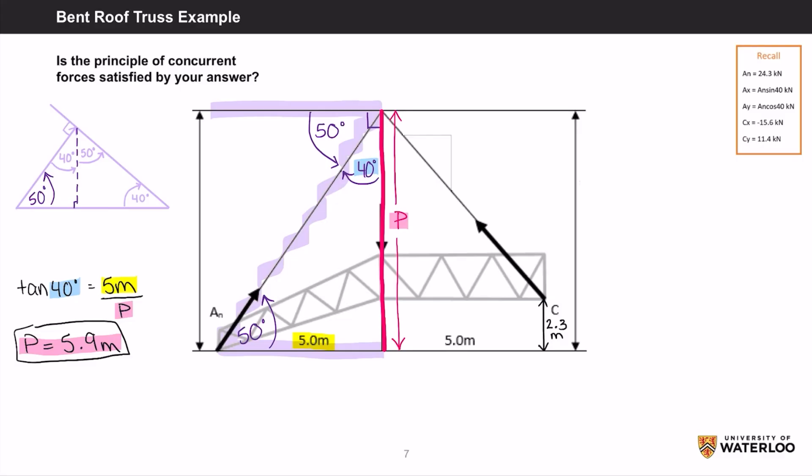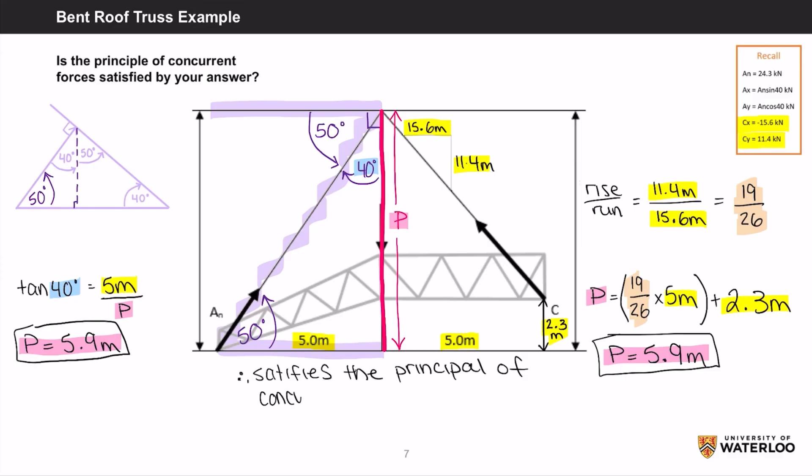To find the height for the right side of the diagram, we can use CX and CY as distances instead of forces as they are also the ratio of force C. Using the ratio of 11.4 over 15.6 or also known as 19 over 26, we can multiply it by the distance to see what the height would be in 5 meters. So P equals 19 over 26 times 5 meters. Don't forget to add 2.3 meters after as the right side of the diagram is slightly higher than the left. You then get P equals 5.9 meters, showing that this system does satisfy the principle of concurrent forces.